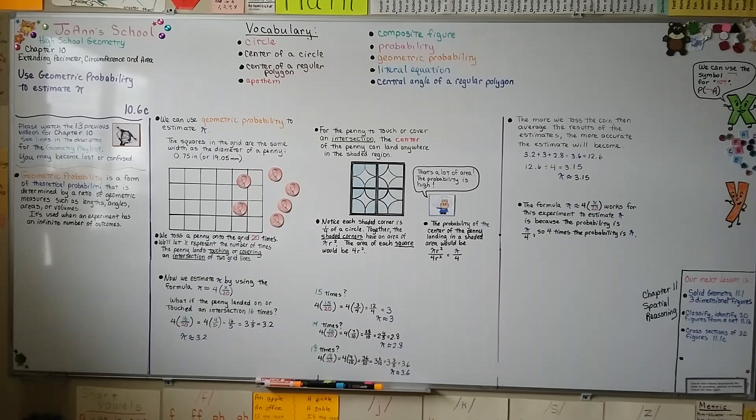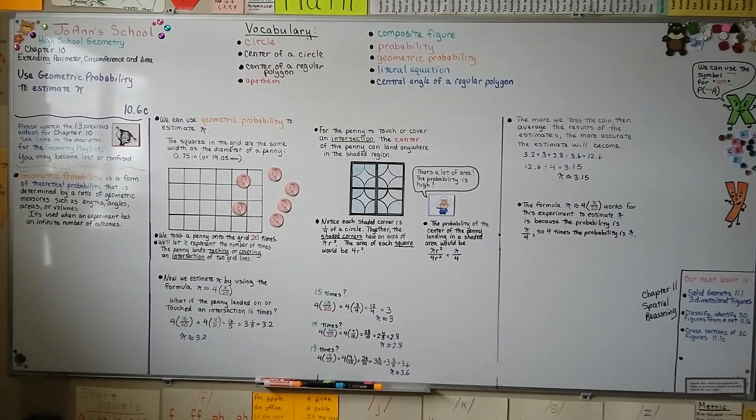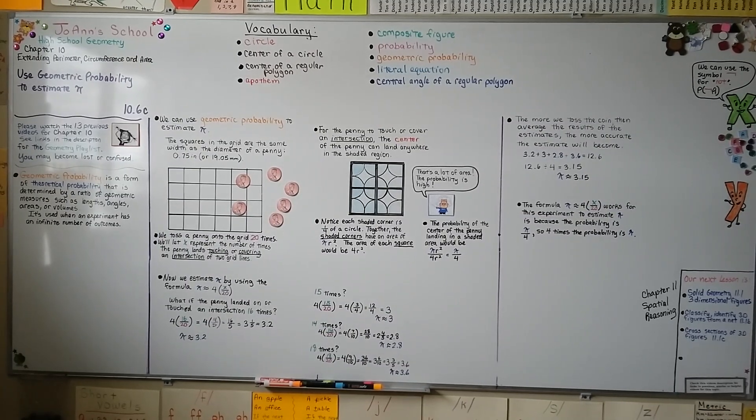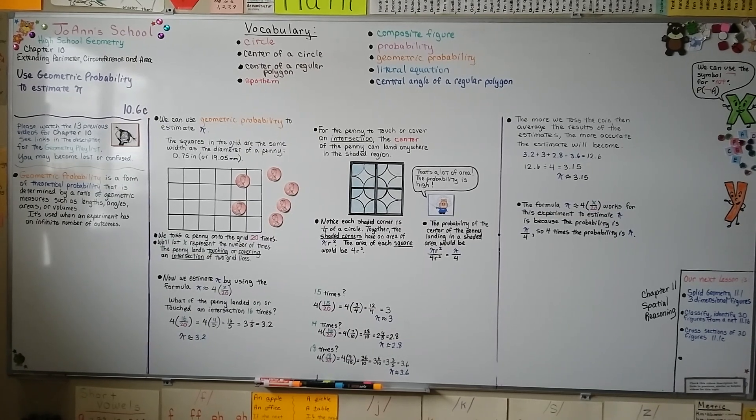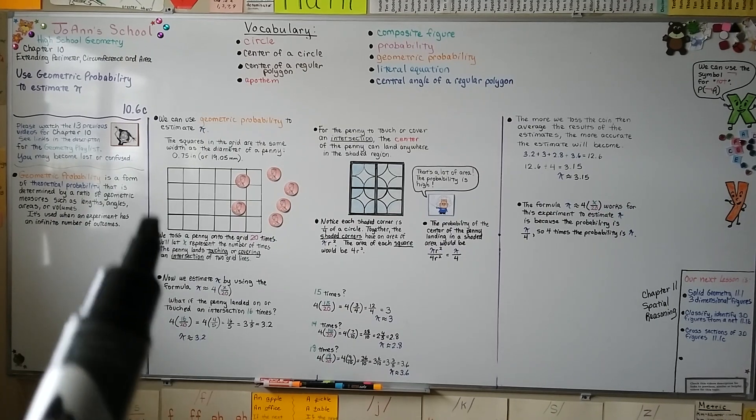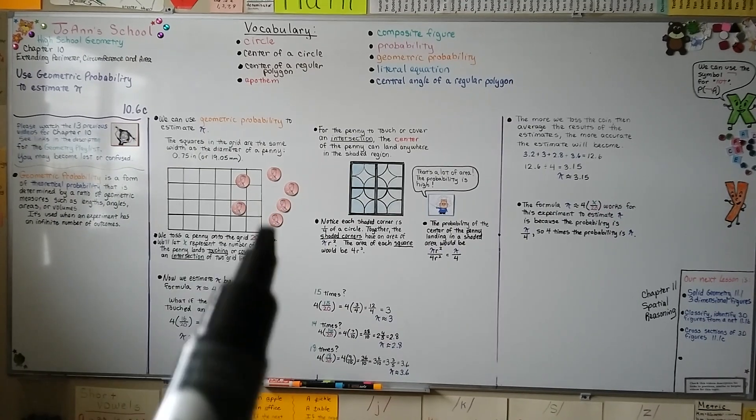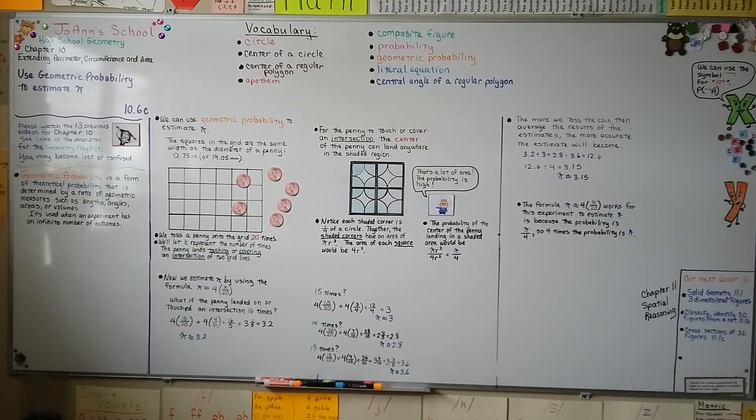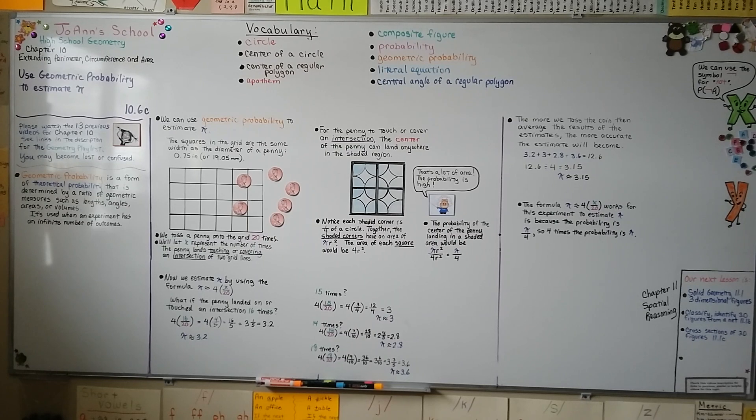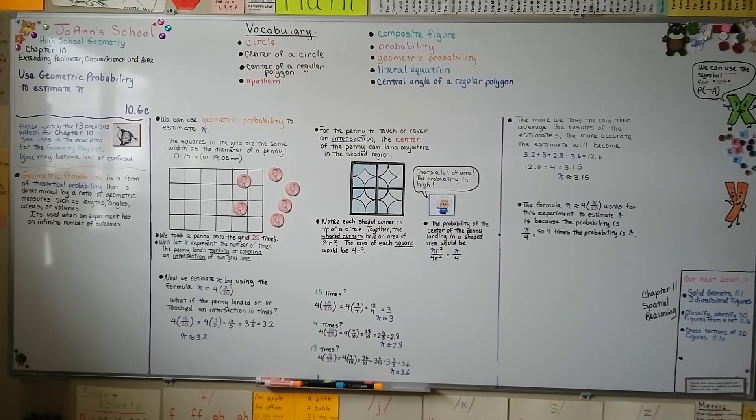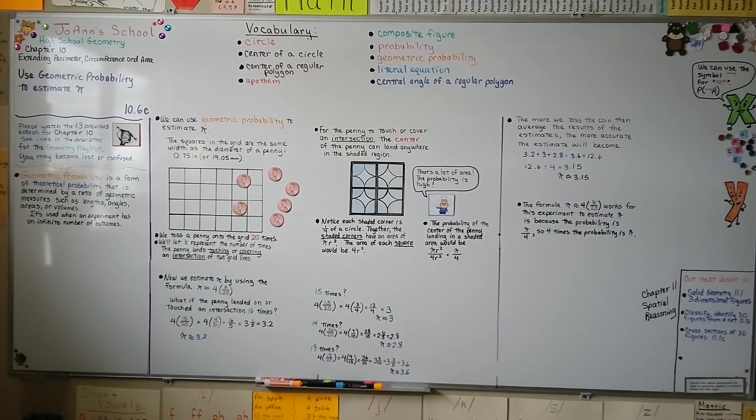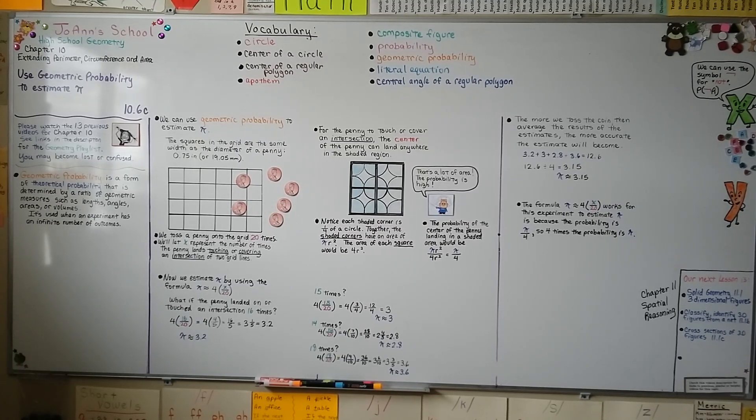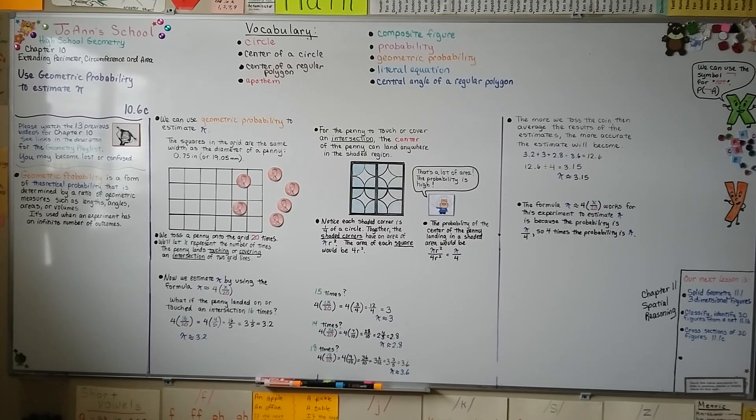If you're following along with me in the Holt High School Geometry textbook, you can do this penny experiment with the grid on page seven twenty five. You can also try making your own grid four down and six across the width of the coin, and do it twenty times and then use our formula pi is approximately four times the quotient of x and twenty. Remember the twenty stands for how many times you're tossing that coin. See how many times you can count it touching or covering an intersection and see what you come up with for an estimate for pi.